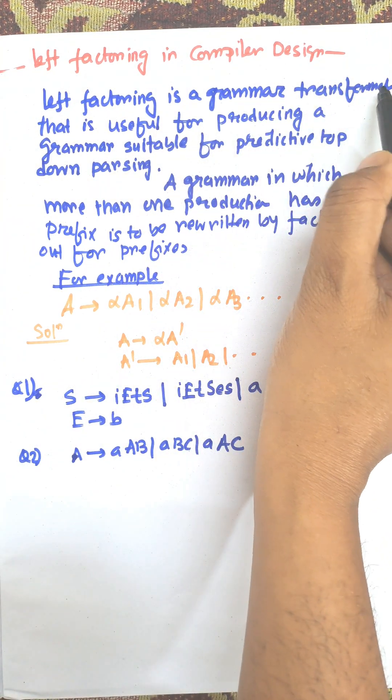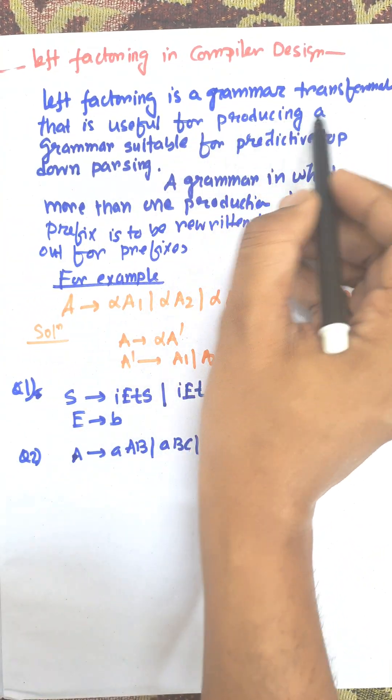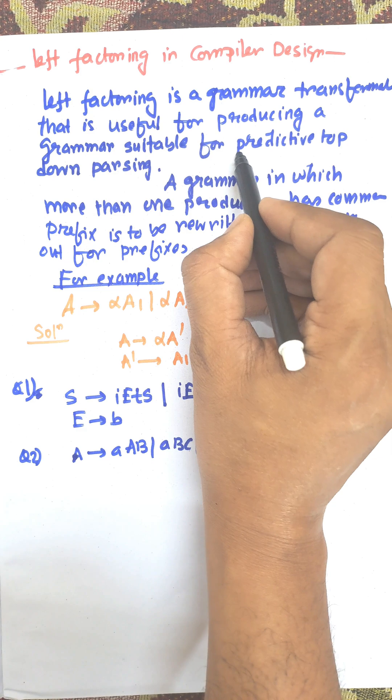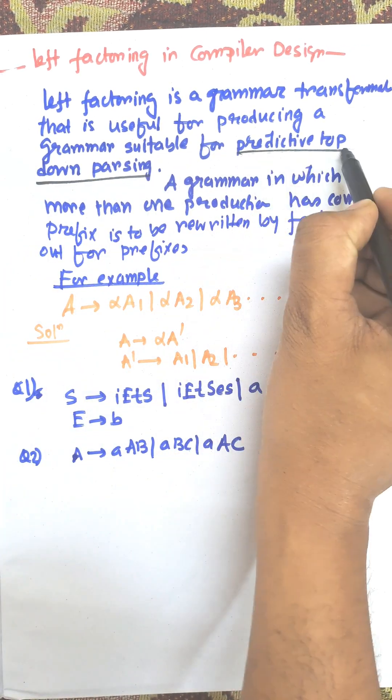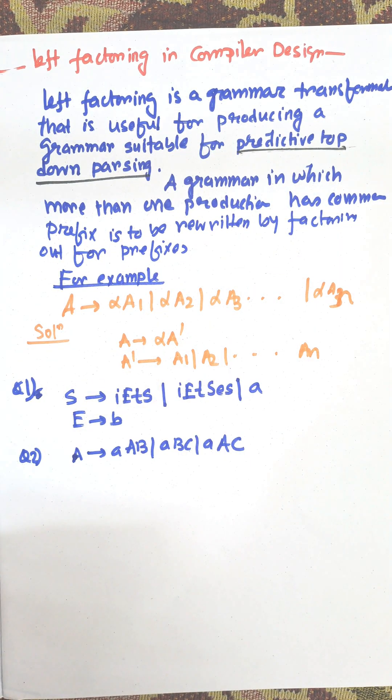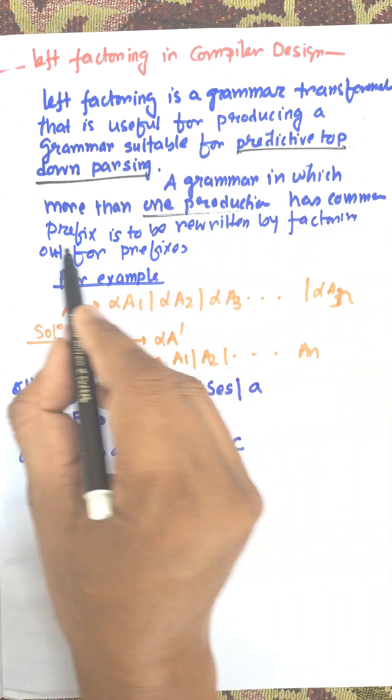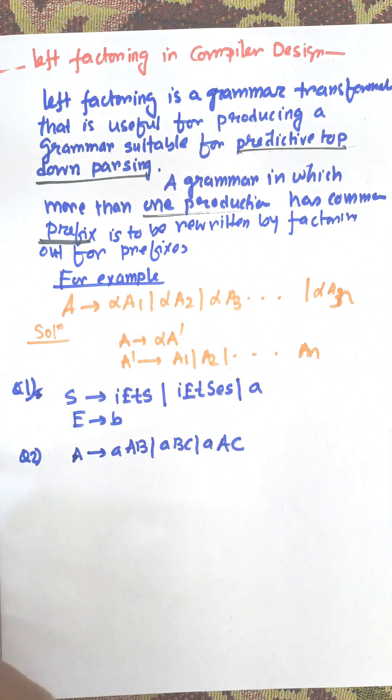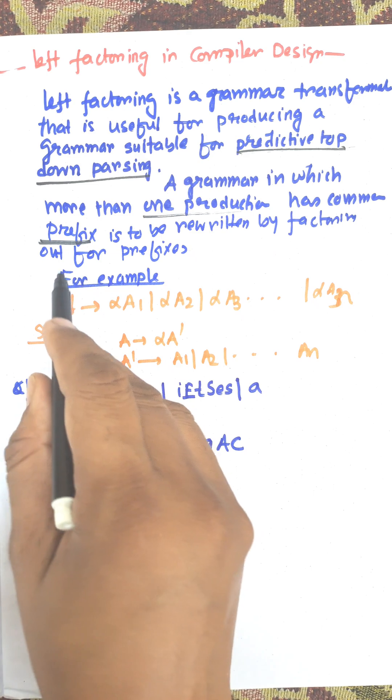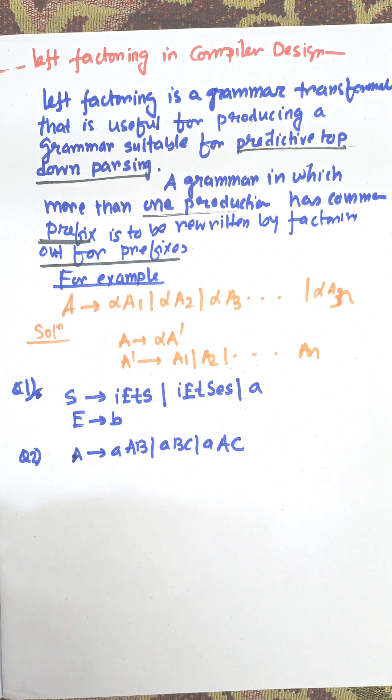Left factoring is a grammar transformation that is useful for producing a grammar suitable for predictive top-down parsing. A grammar in which more than one production has common prefix is to be rewritten by factoring out the prefix. This is left factoring.